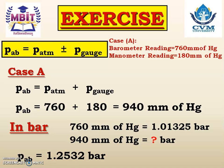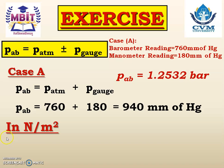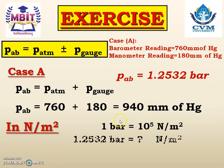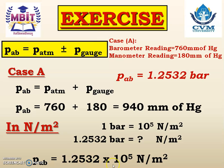Now we require the answer in newton per meter square as well. Since 1 bar equals 10 raise to 5 newton per meter square, then 1.2532 bar equals 1.2532 into 10 raise to 5 newton per meter square. So the complete answer for case A: absolute pressure in bar is 1.2532 bar and in newton per meter square is 1.2532 into 10 raise to 5.